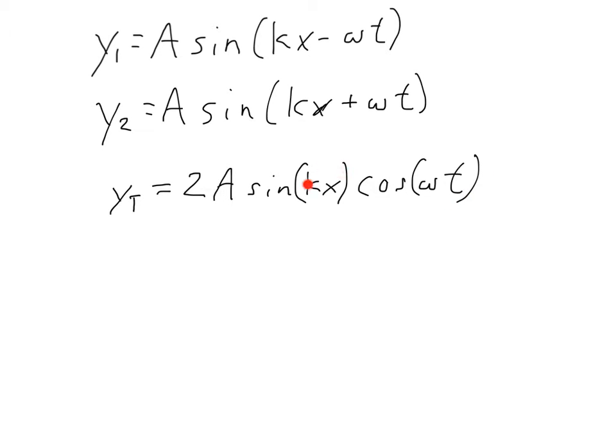And conversely, I can choose a certain value of x where it's at a maximum amplitude, and then of course, it will go between zero and that maximum amplitude with time, and so it will oscillate up and down like mad versus just staying still.